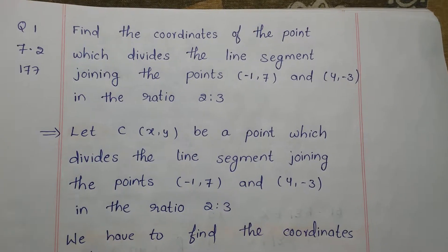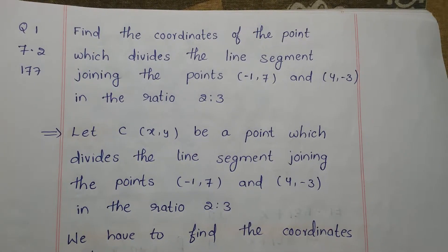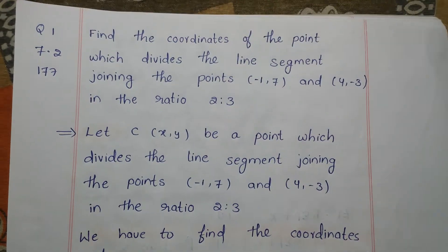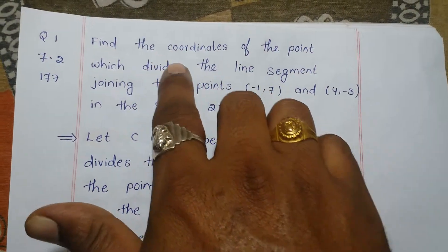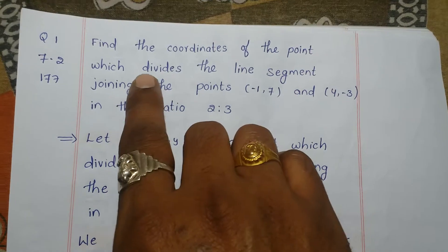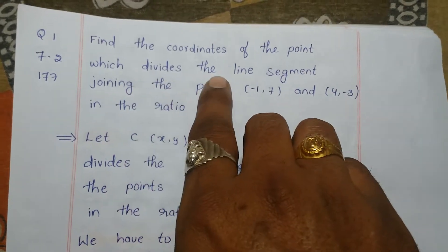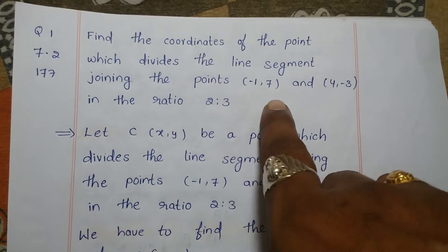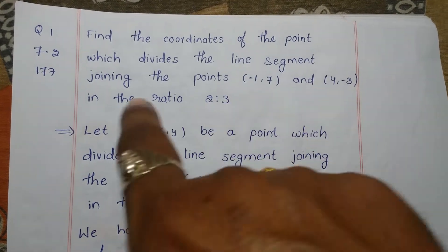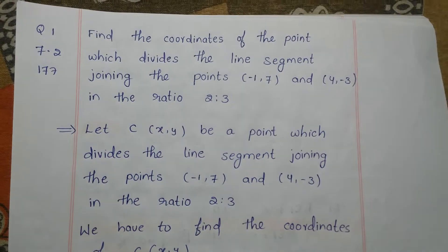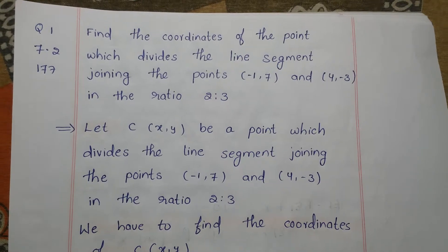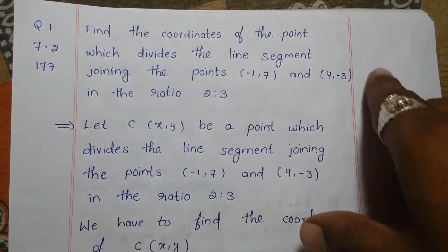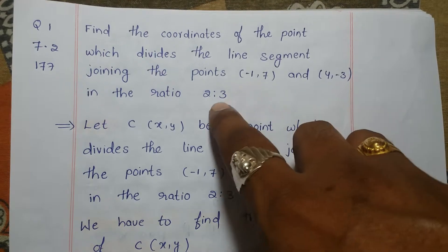Question No. 1, Exercise 7.2, Page No. 177. Here is the question: Find the coordinates of the point which divides the line segment joining the points in the ratio 2 is to 3. So we have to find the coordinates of the point which divides the line joining the points in the ratio 2 is to 3.